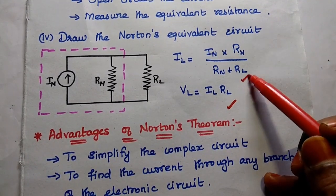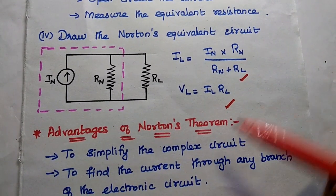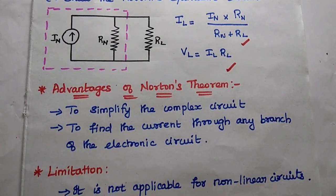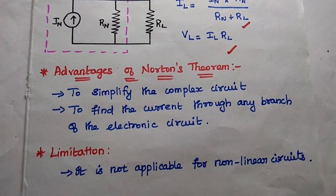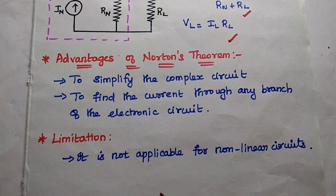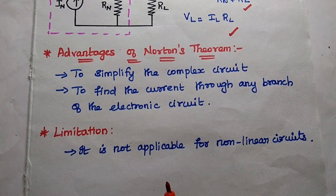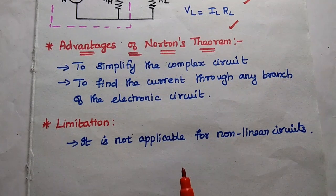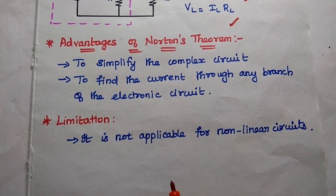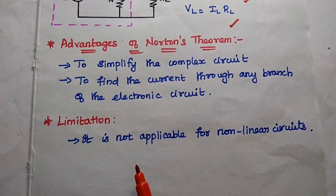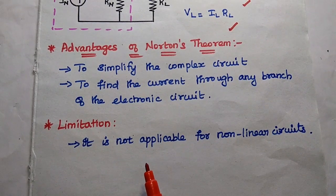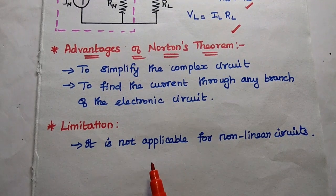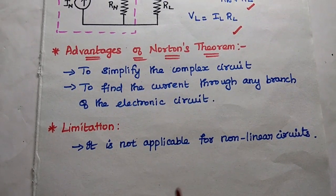We can find out both load current and load voltage using Natan's theorem. Regarding advantages: it is mainly used to simplify the linear complex circuit and to find out the current through any branch of the complex network. The limitation is that it is only applicable for linear circuits, not for non-linear circuits.